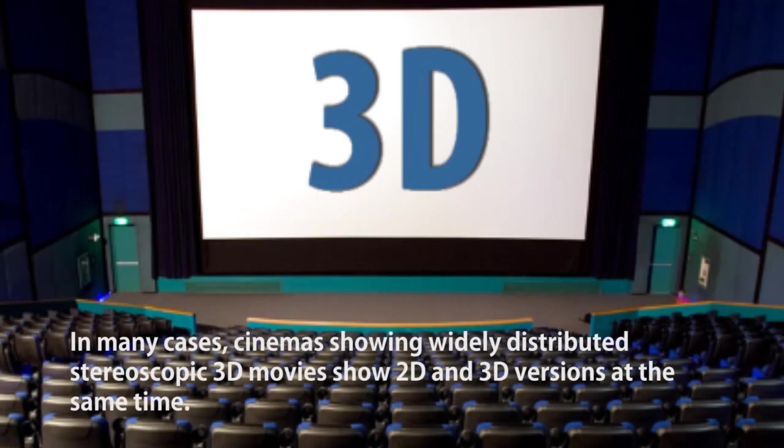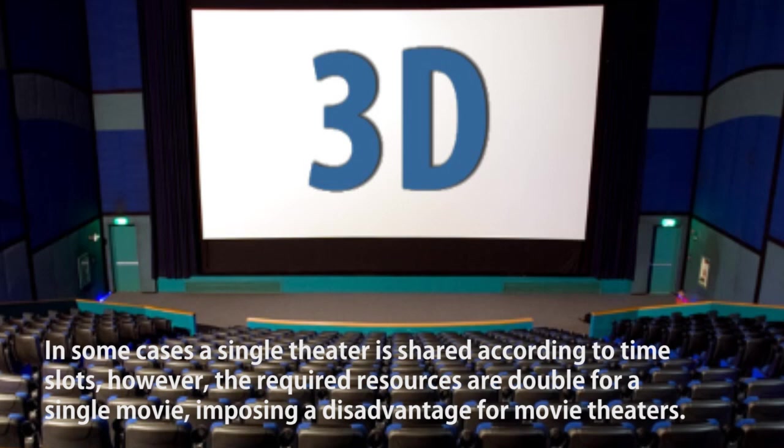In many cases, cinemas showing widely distributed stereoscopic 3D movies show 2D and 3D versions at the same time. In some cases, a single theater is shared according to time slots; however, the required resources are double for a single movie, imposing a disadvantage for movie theaters.